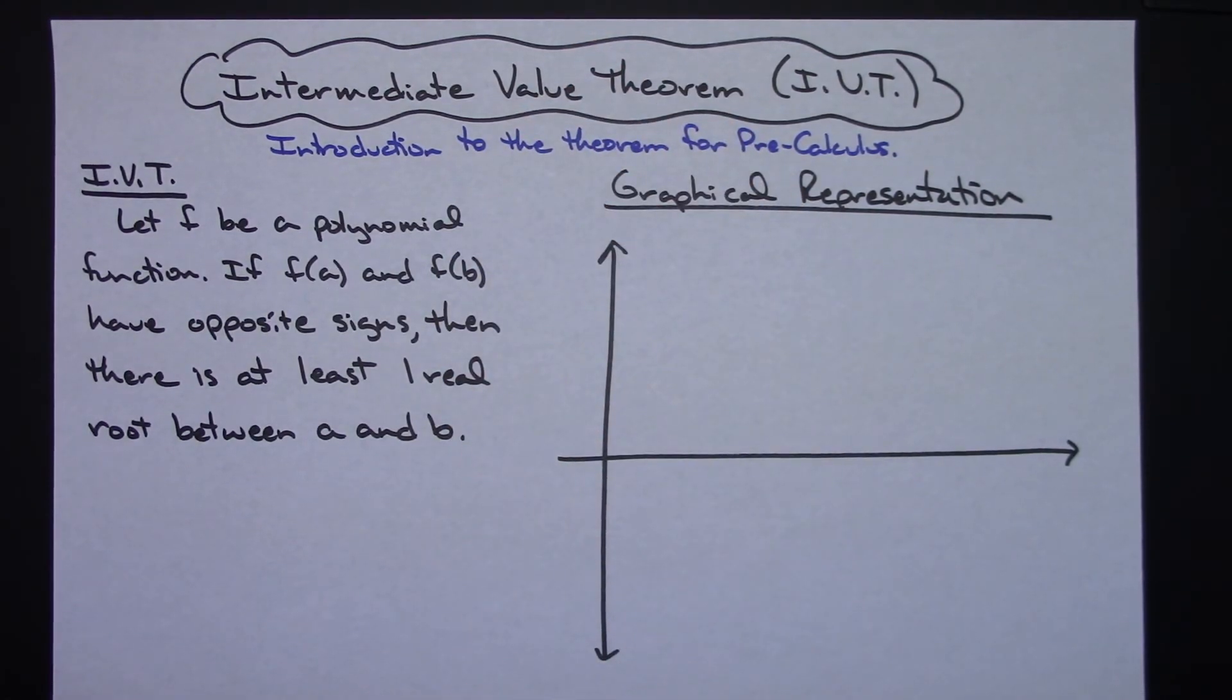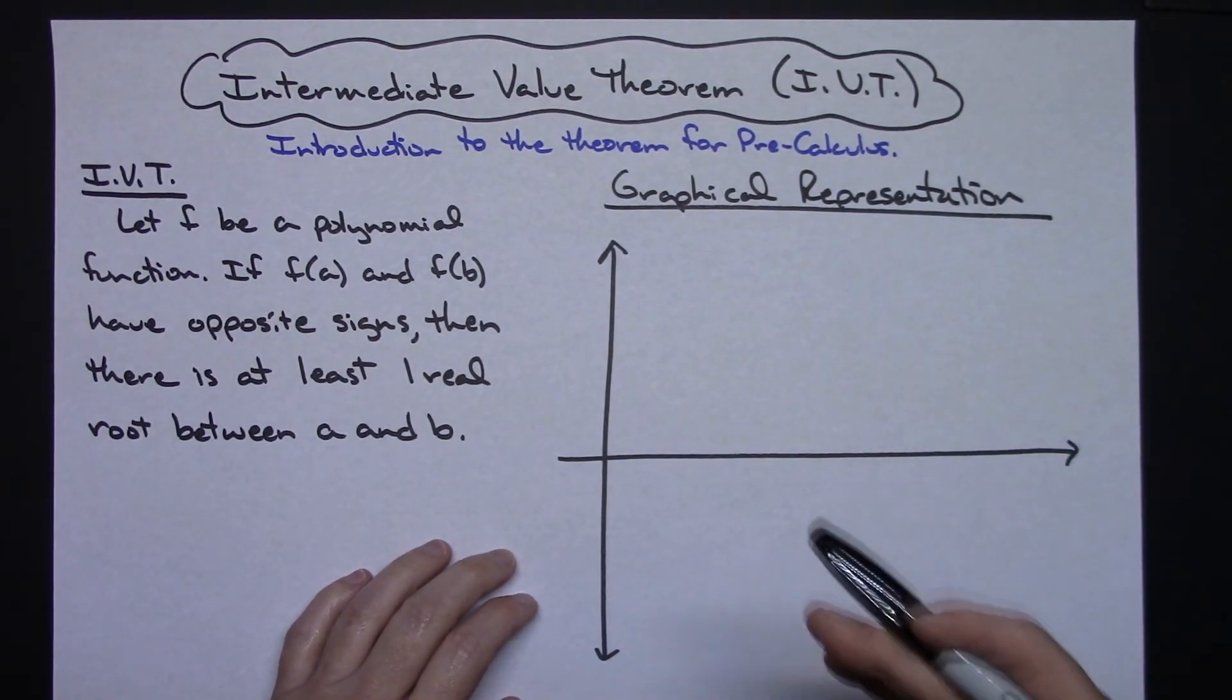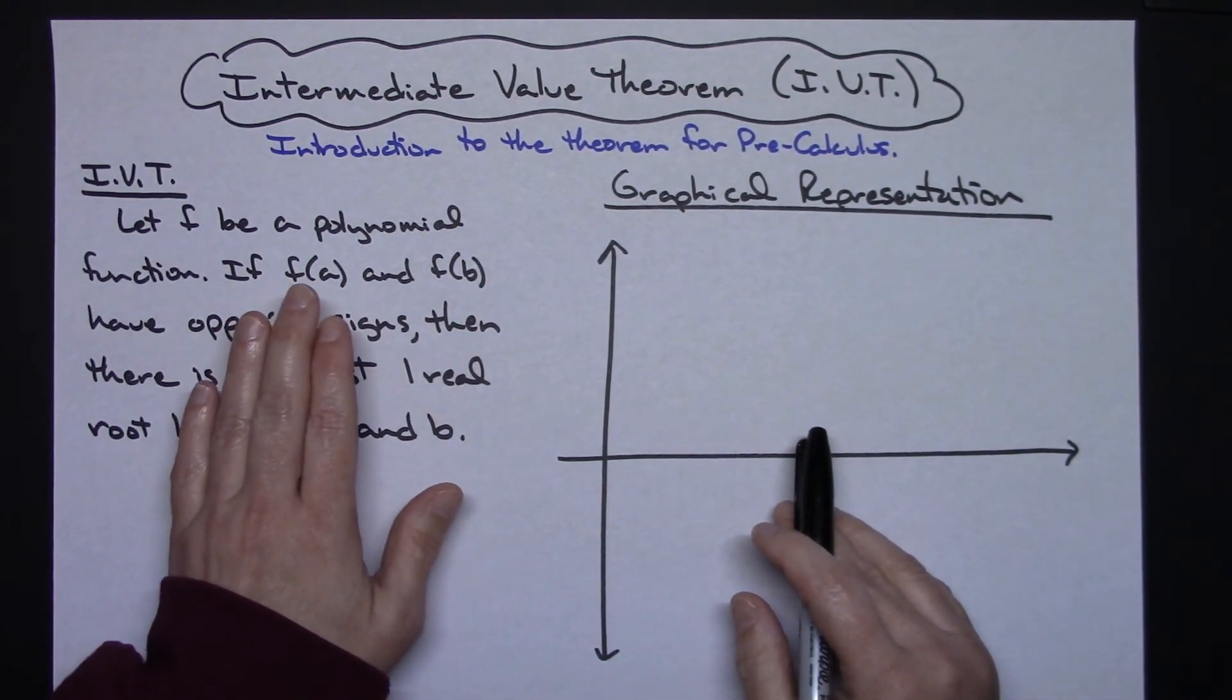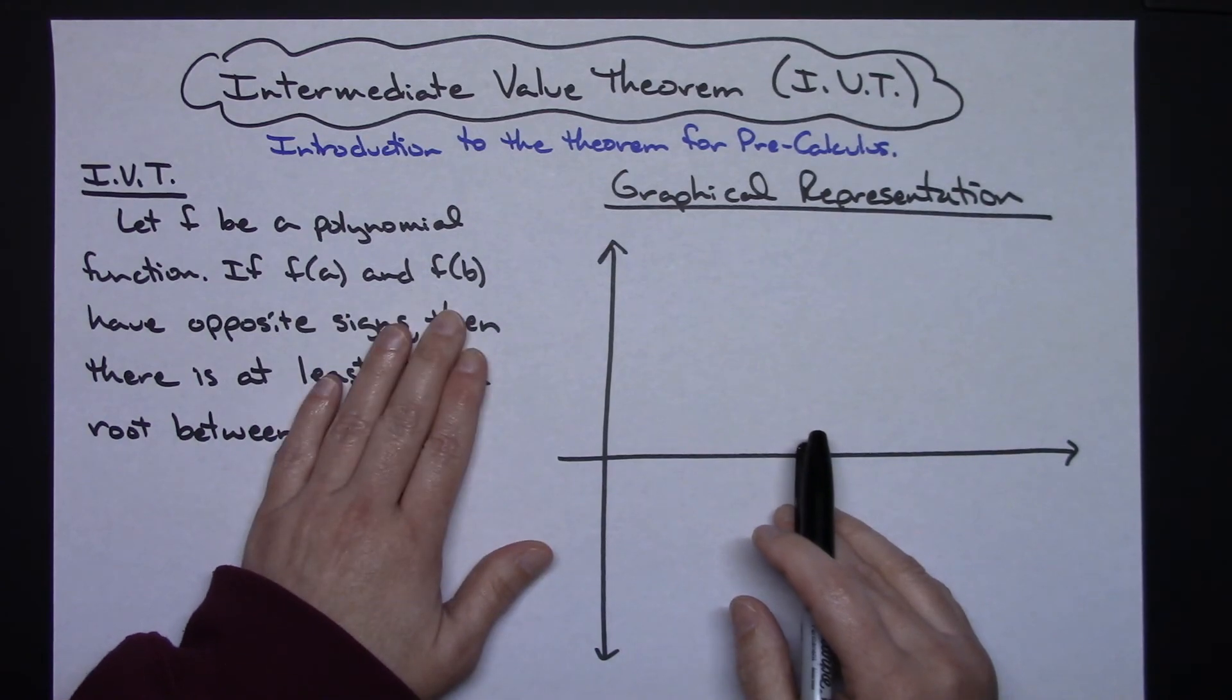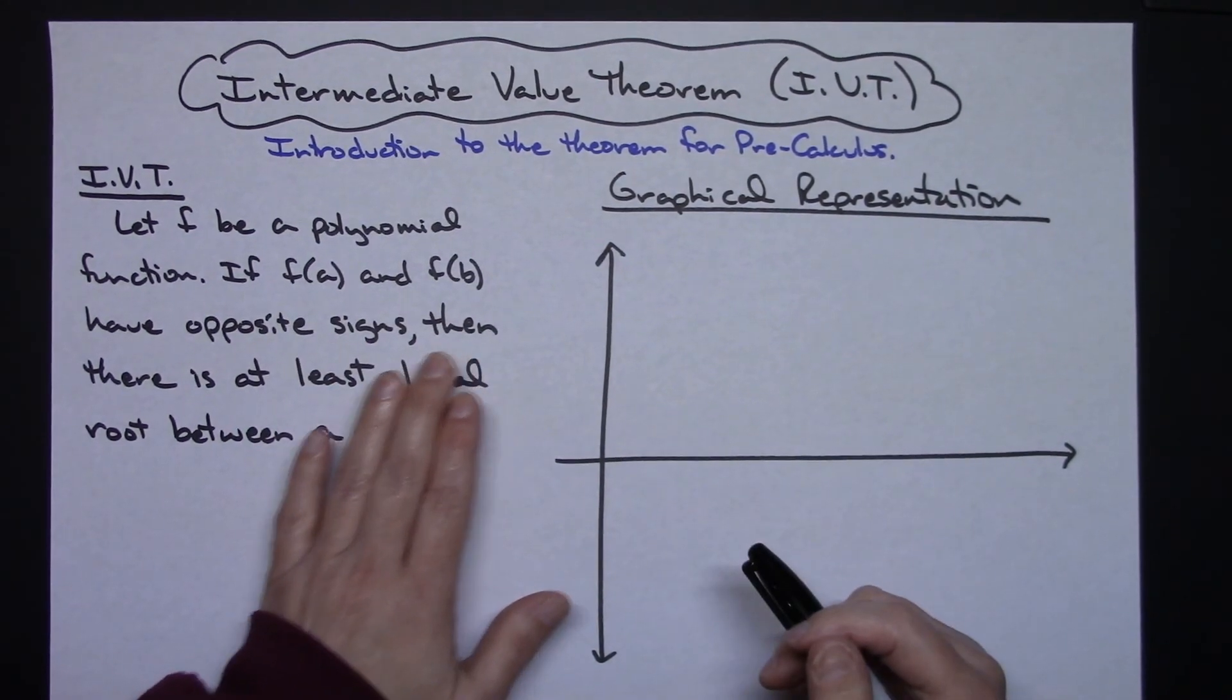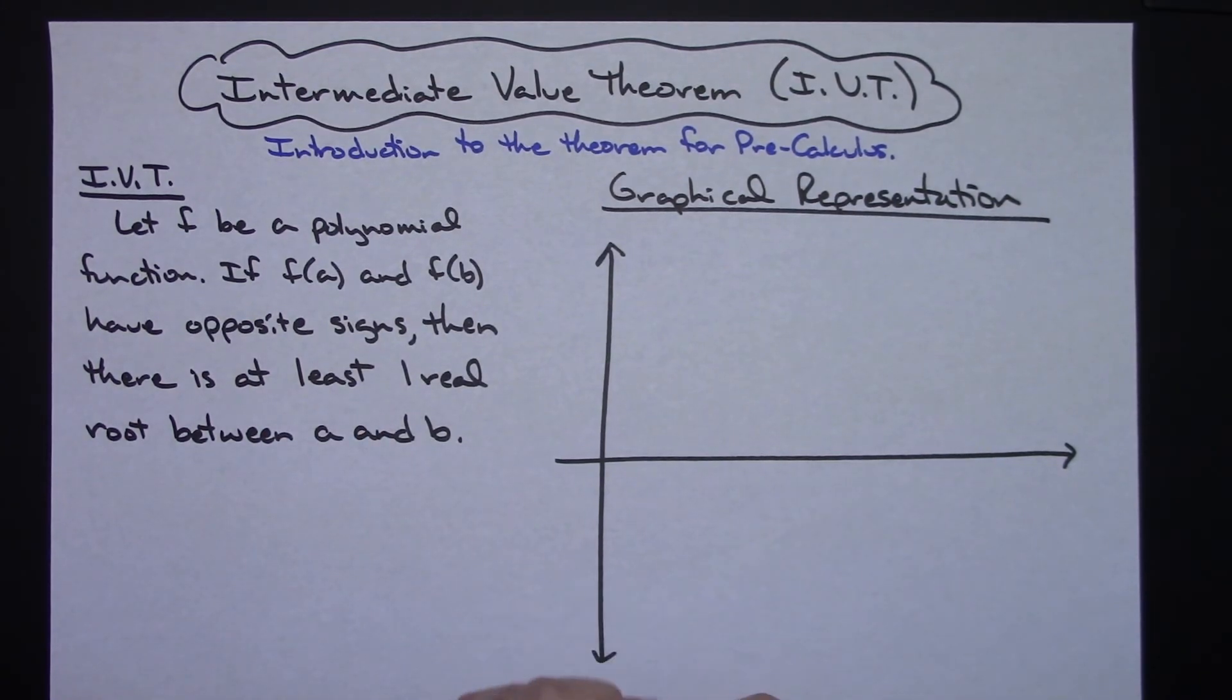So what we're going to do is take a look at what this could possibly look like from a graphical standpoint. I'm going to have some polynomial function F. I'm going to have an F of A and an F of B, and if I force them to have opposite signs, then there has to be at least one real root.